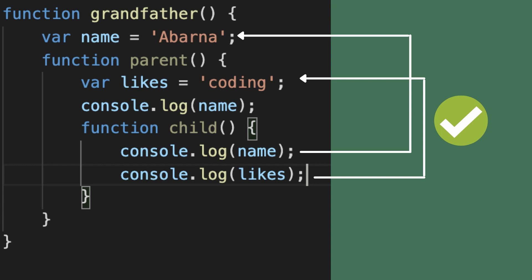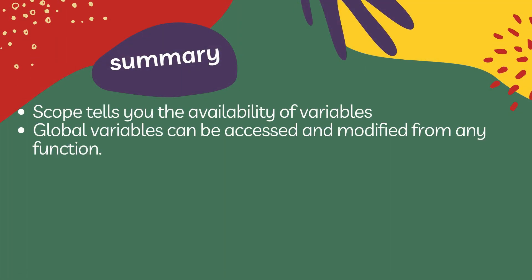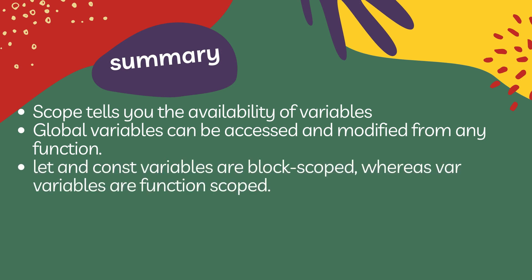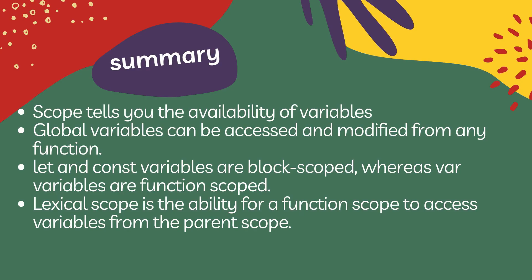But the reverse is not possible. So basically, in lexical scope, the child function has the ability to access variables in a parent function. To summarize: scope tells you the availability of a variable. Global variables can be accessed and modified from any function. 'let' and 'const' are block scoped, whereas 'var' is function scoped. Lexical scope gives a function the ability to access variables from its parent scope.